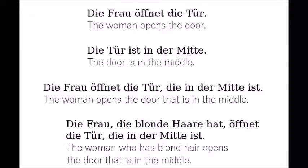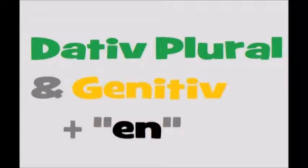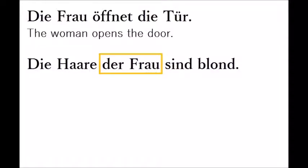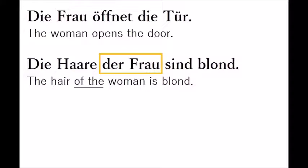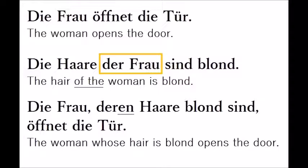There are two cases in which the definite article and the relative pronoun are not exactly the same. If the relative clause has the noun in the dativ plural or the genitive, then you need to add '-en' to the article. For example: 'Die Haare der Frau sind blond' — 'The hair of the woman is blonde.' This description has the woman not as the subject but as the owner of the hair, which is genitive. So you need to add '-en' to the article to make it the relative pronoun: 'Die Frau, deren Haare blond sind, öffnet die Tür.' — 'The woman, whose hair is blonde, opens the door.'